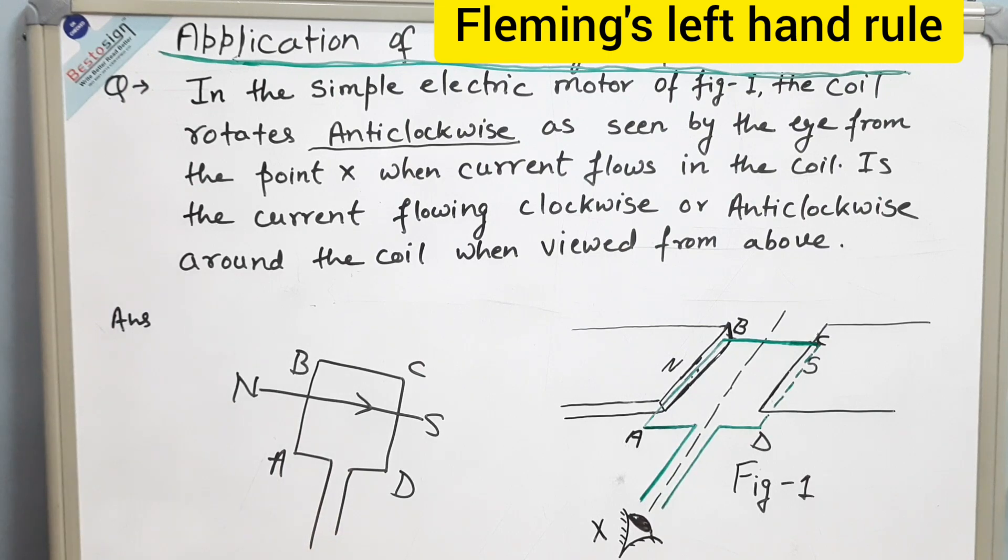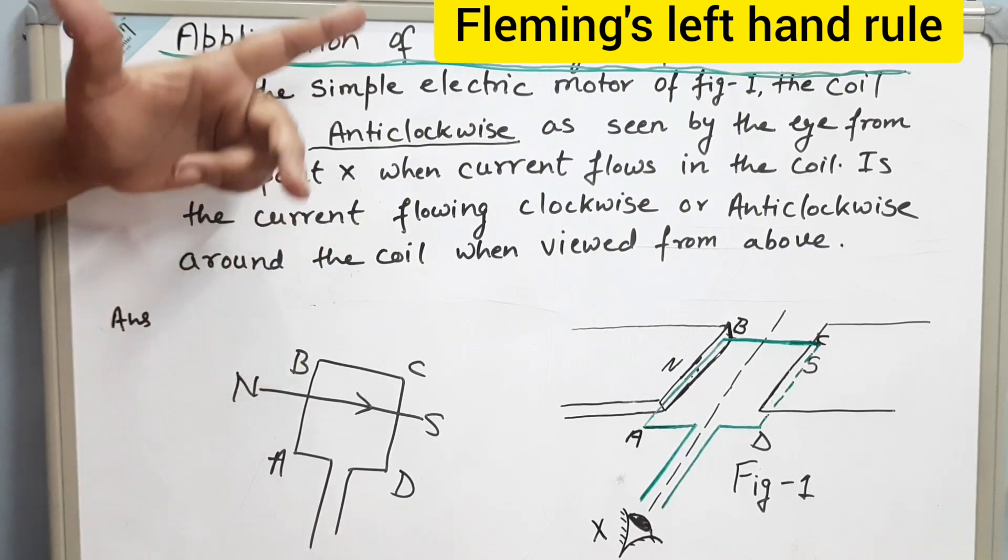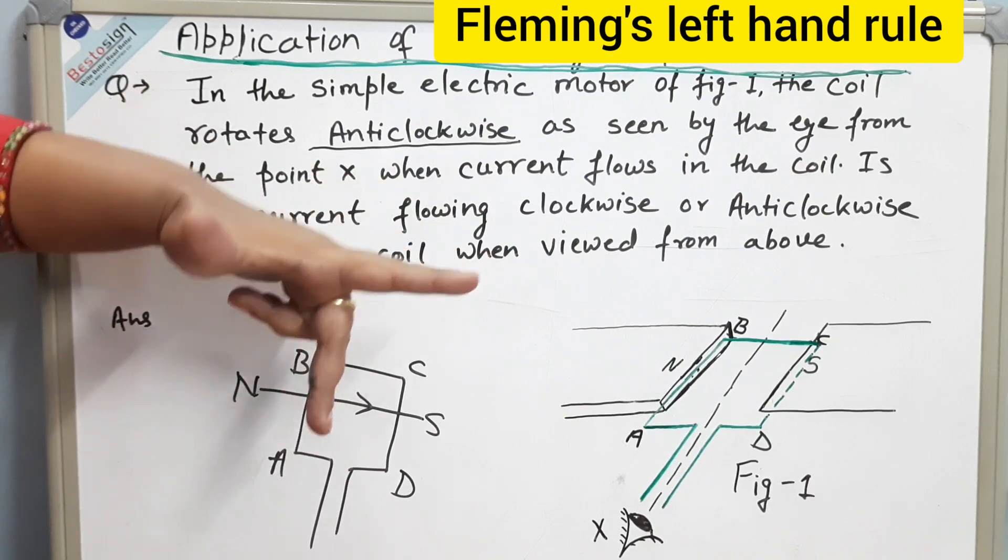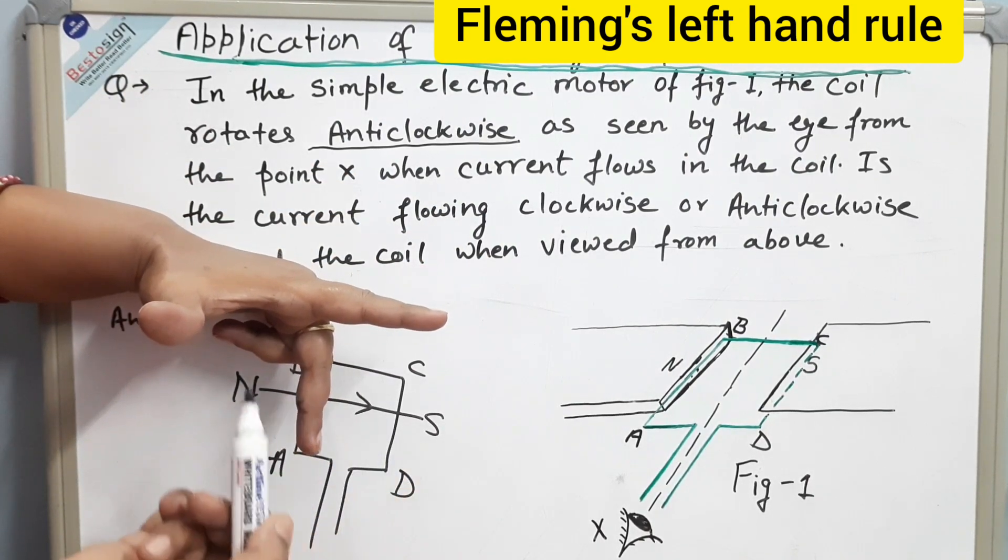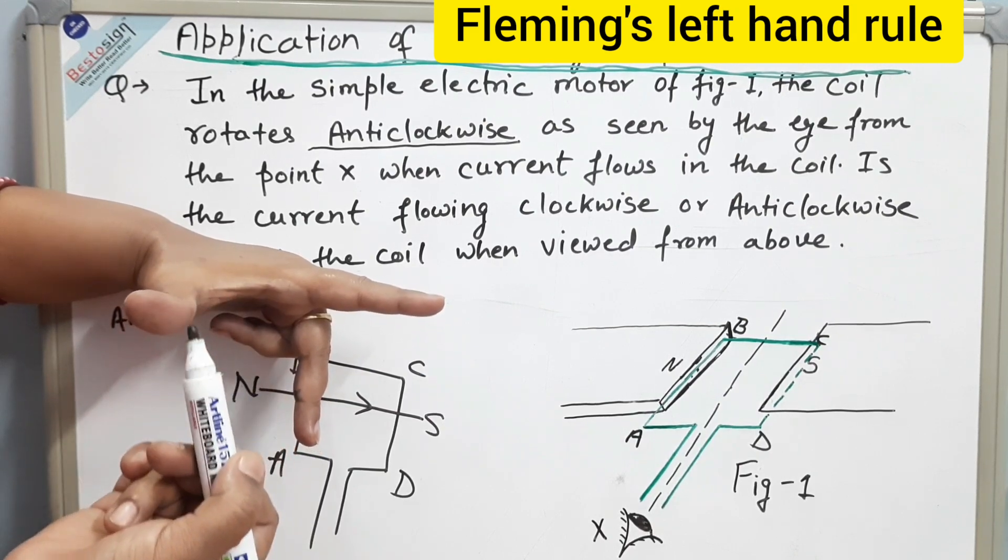And now with the use of Fleming's left hand rule, we will see the direction of current. If the side cd has to go up, it means the force on cd should be upward.